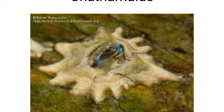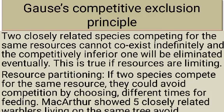Generally, herbivores and plants are more adversely affected by competition than carnivores. Gause's competitive exclusion principle states that two closely related species competing for the same resources cannot coexist indefinitely, and the competitively inferior one will be eliminated eventually. If one species is competitively superior and another is inferior, they cannot coexist indefinitely and the inferior one will be slowly eliminated by the superior one.